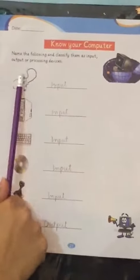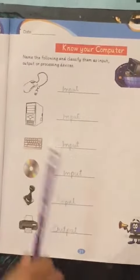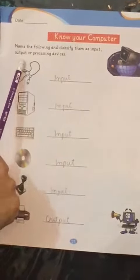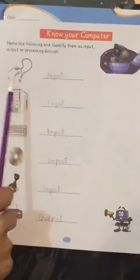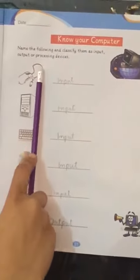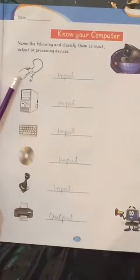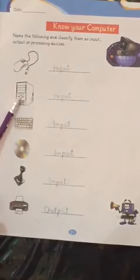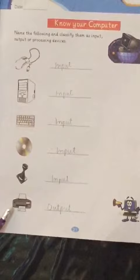Now come to page number 21. Here is a statement: name the following and classify them as input, output, or processing device. Input devices are the components through which we can enter our data. Output devices are the components through which we can access our data. Processing devices are components through which we can store or manage our data. The components listed are: mouse, CPU, keyboard, CD, joystick, and printer.